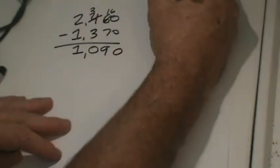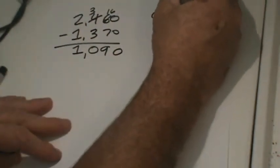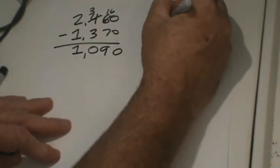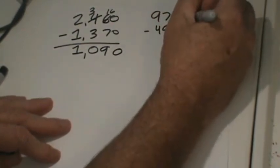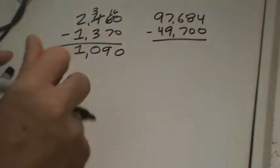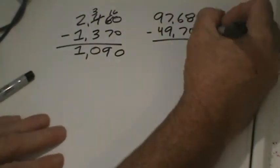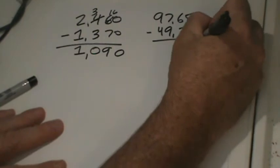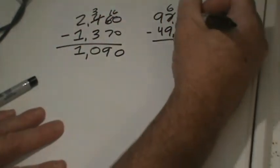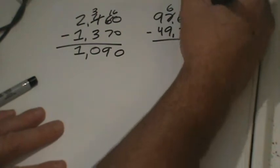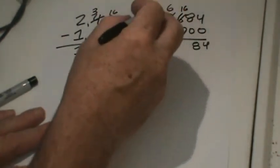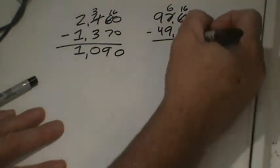Let's go to C: 97,684 and we'll be subtracting 49,700. It's always fun when there's zeros. Four minus zero is four. Eight minus zero is eight. We've got to take away a thousand and make it six. We're going to put ten hundreds here, so now we have 16 hundreds. 16 hundreds minus seven hundreds is nine hundreds.